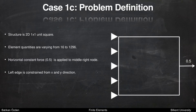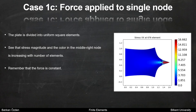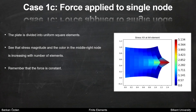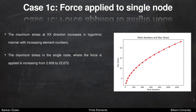For case 1c, we have a 2D 1-by-1 unit square structure. Element quantities are varying from 16 to 1296. A horizontal constant force of 0.5 is applied to the middle-right node and the left edge is constrained from x and y directions. The plate is divided into uniform square elements. The stress magnitude in the middle-right node is increasing with each step, even though the force is constant. The maximum stress in xx direction increases logarithmically from 2.6 to 23.0.